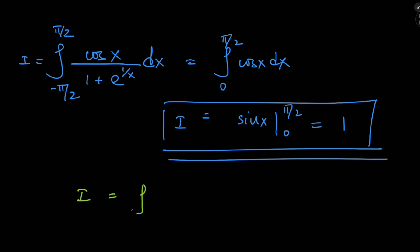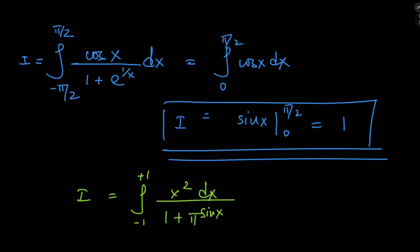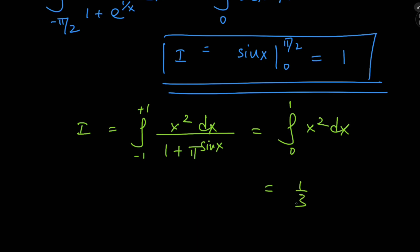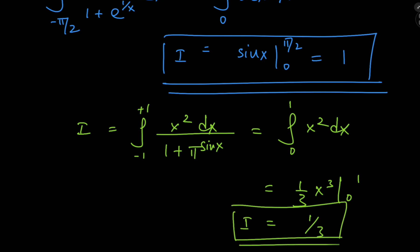The second integral was from negative 1 to positive 1 of x² divided by 1 plus π to the sin(x). And yeah, that's a pretty funny looking integrand. But this is just a fancy way of writing the integral from 0 to 1 of x² dx. That gives one third x³ evaluated from 0 to 1, so the second integral equals 1/3.